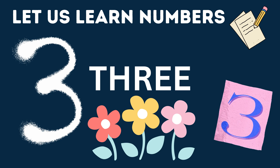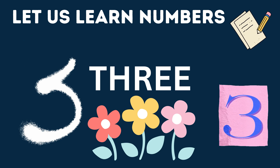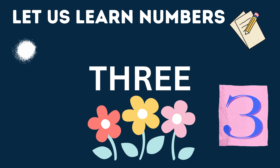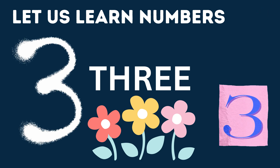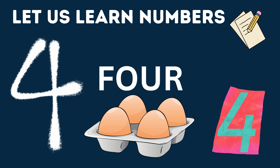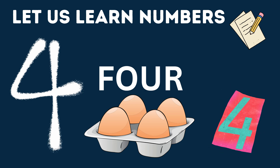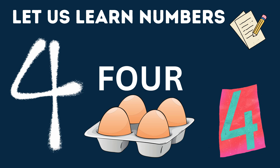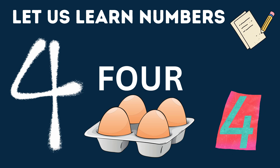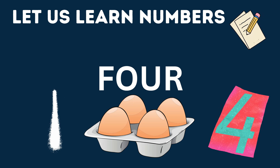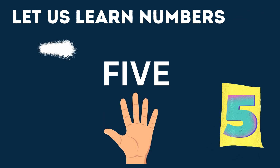OK. 3 — T, H, R, E, E — 3. How many flowers do you see? Three beautiful flowers. OK. 4 — F, O, U, R — 4. How many eggs do you see? Four brown eggs.